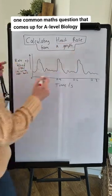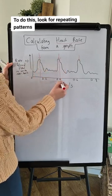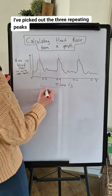One common maths question that comes up for A-level biology is calculating the heart rate from data on a graph. To do this, look for repeating patterns, such as here I've picked out the three repeating peaks.